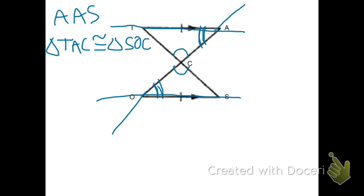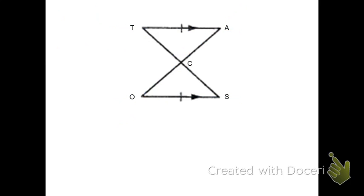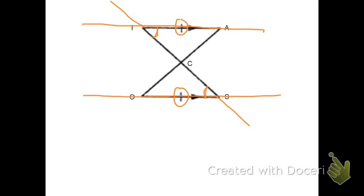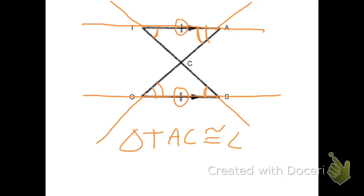Now let's do the same proof using Angle-Side-Angle. We know that these two sides are congruent because that's given. We also know that lines TA and OS are parallel. Looking at this transversal, we have two alternate interior angles that are congruent. And looking at this other transversal, we have another pair of alternate interior angles that are congruent. Therefore, by Angle-Side-Angle, triangle TAC is congruent to triangle SOC.